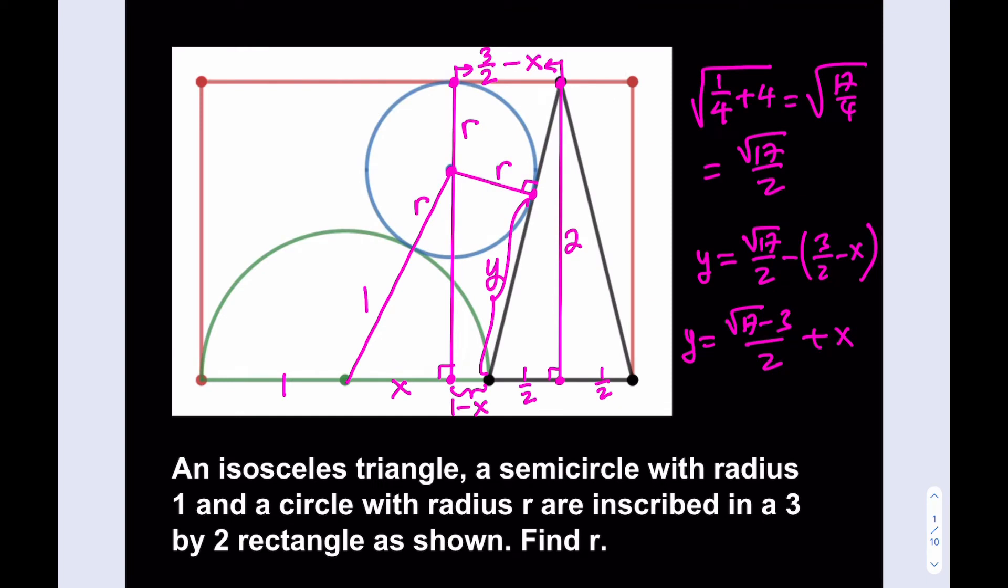y is going to equal, and you'll see in a little bit why I need y. This is r. y is going to equal the square root of 17 over 2, minus 3 halves minus x. In other words, I can write the y as square root of 17 minus 3 over 2 plus x. Beautiful. So, I was able to express y in terms of x. Now, we're going to make a super crucial connection here. We're basically connecting the center of the circle to one of the vertices of the isosceles triangle. And why are we doing that? Because we want to use Pythagorean theorem one more time.